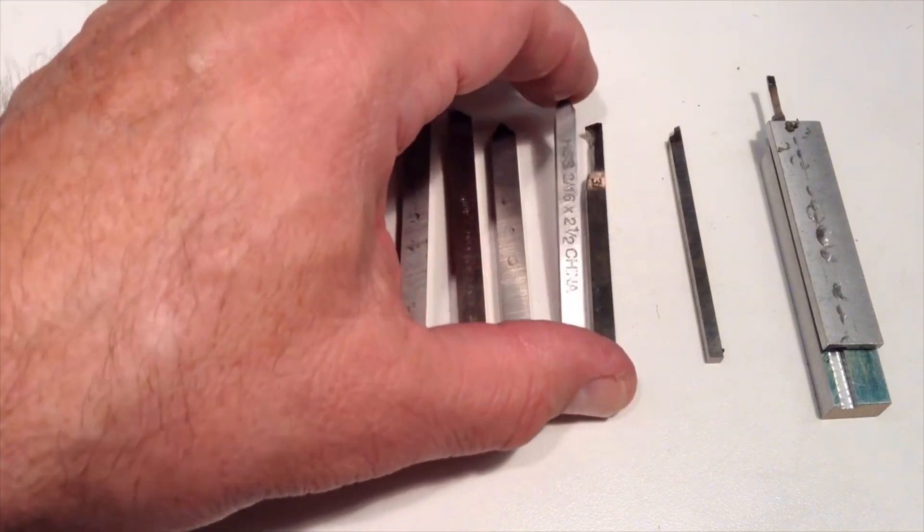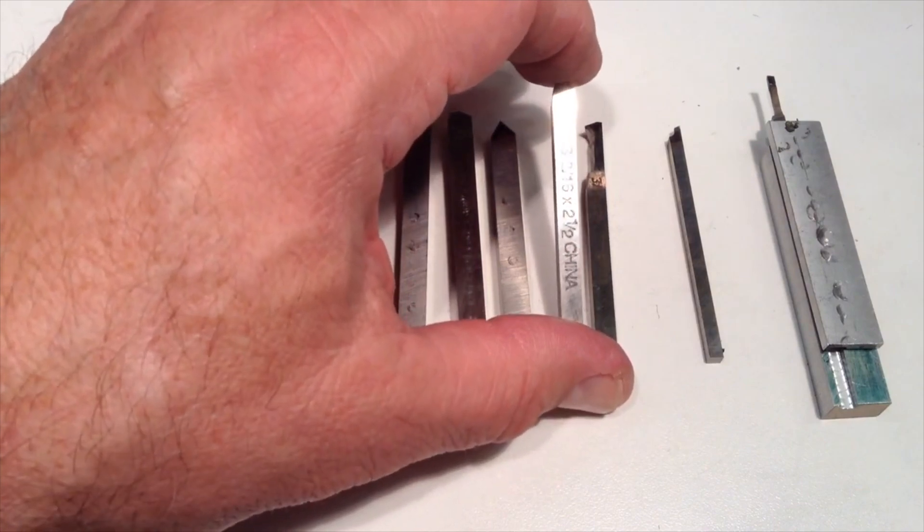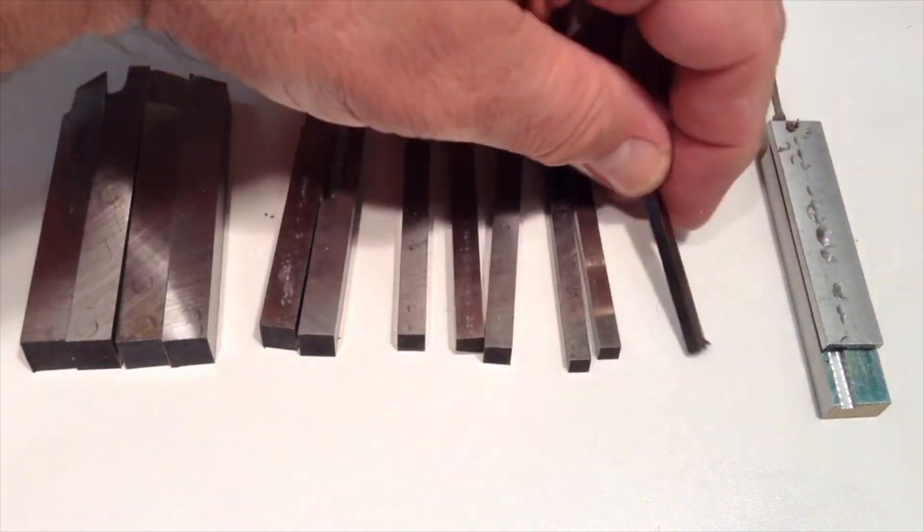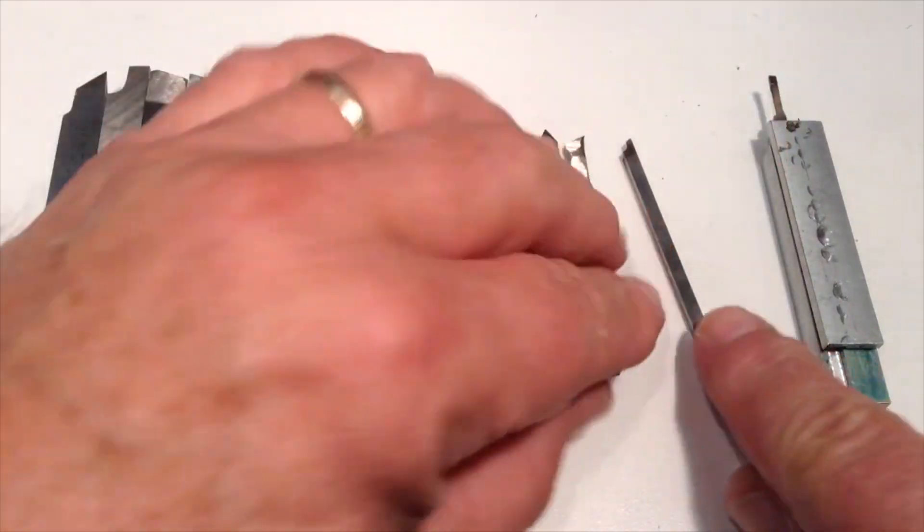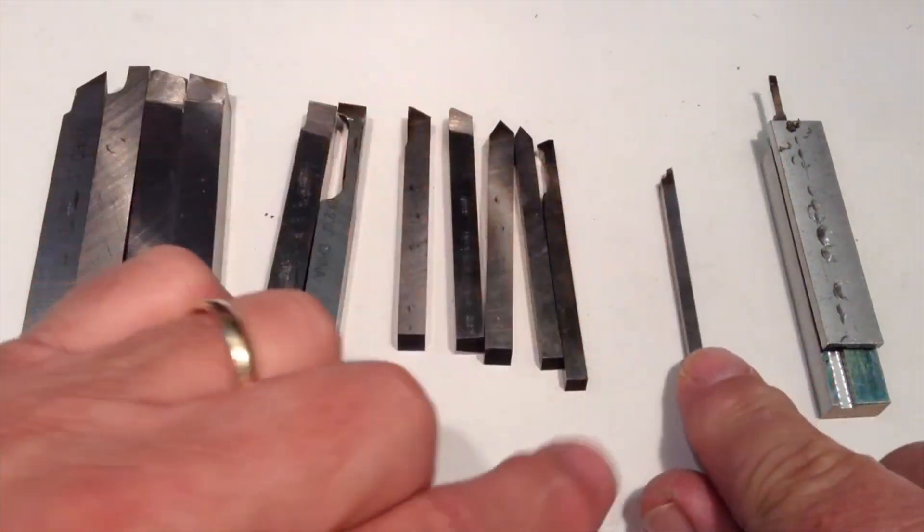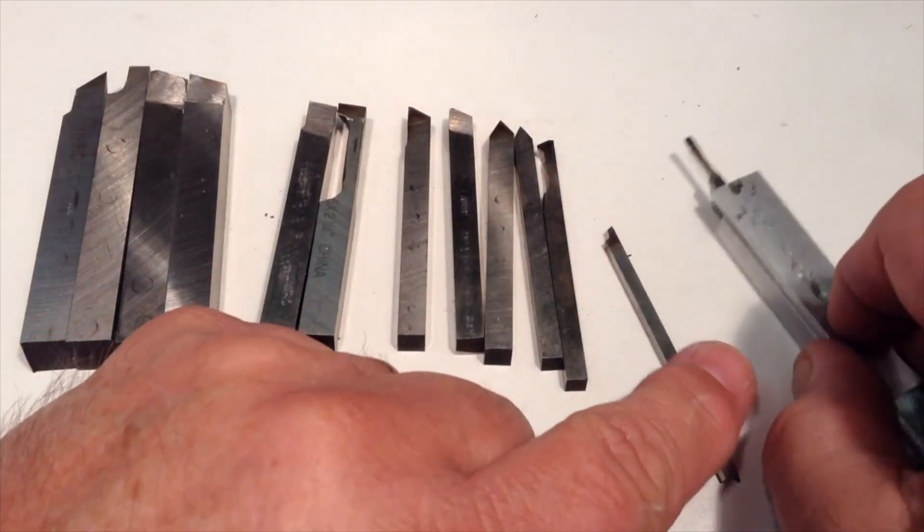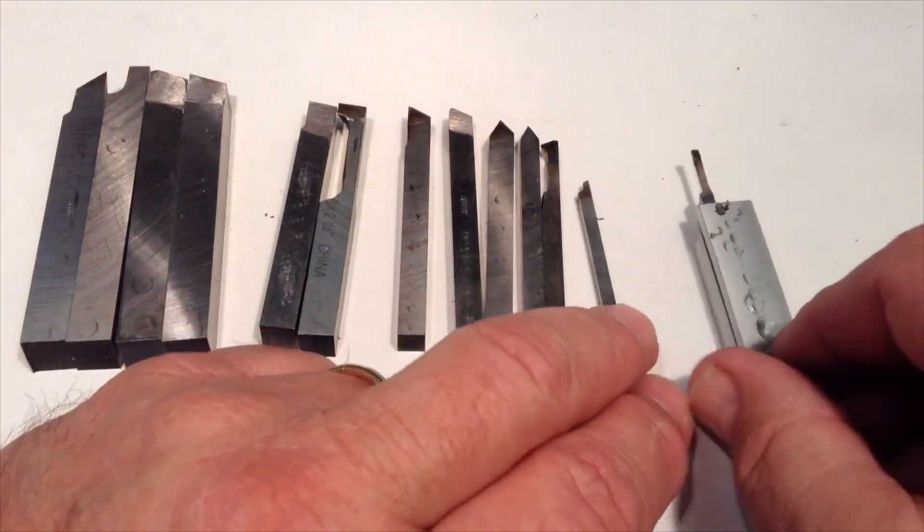But you can also even get smaller ones. These are 3/16ths cross-section, all the way down to this little one here, which is 1⅛ inch. Now these tiny ones, the 1⅛ths, are too small to be practical for most purposes, but they're handy if you do very, very fine work, which I often do.